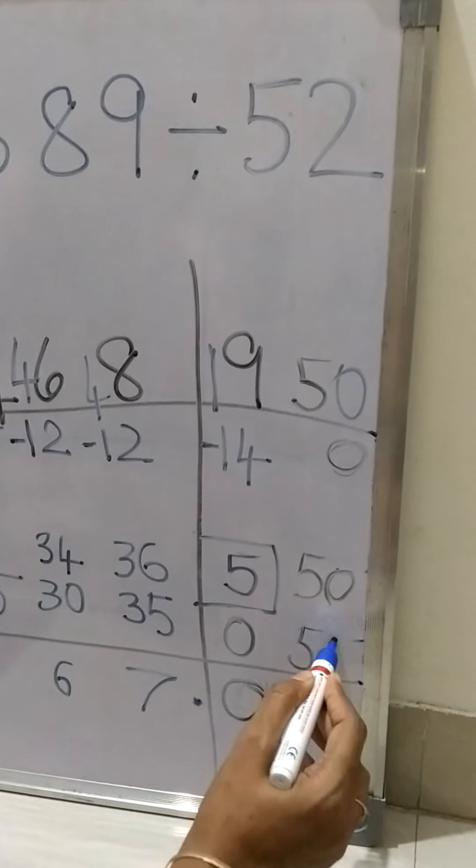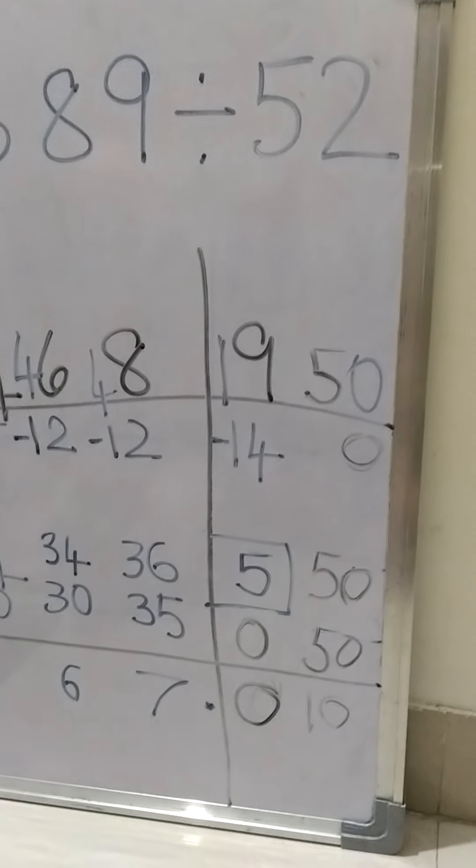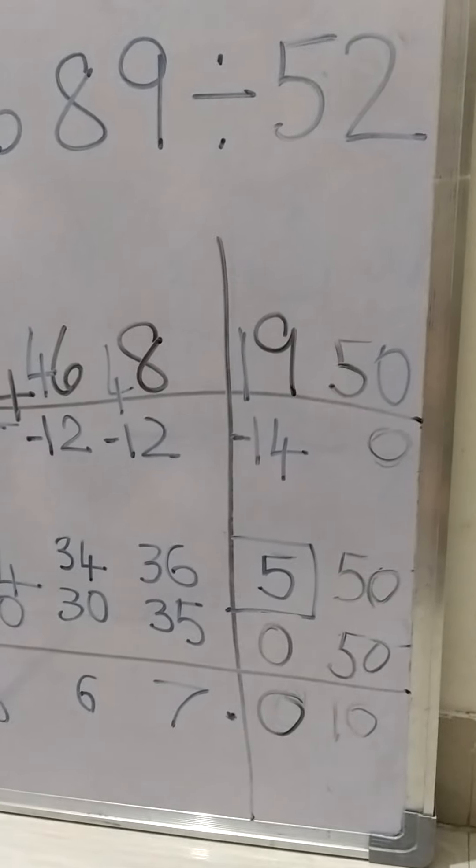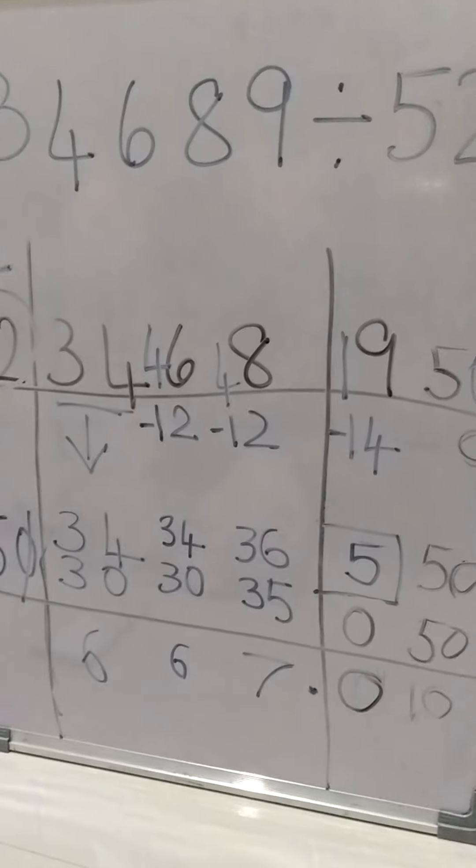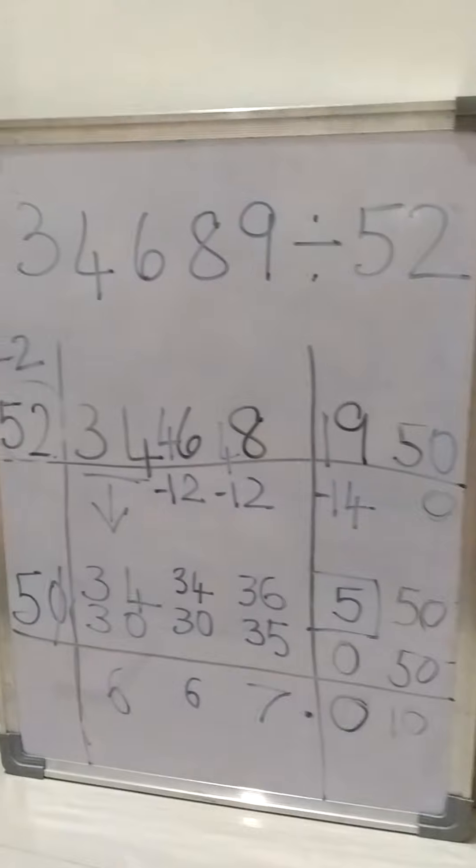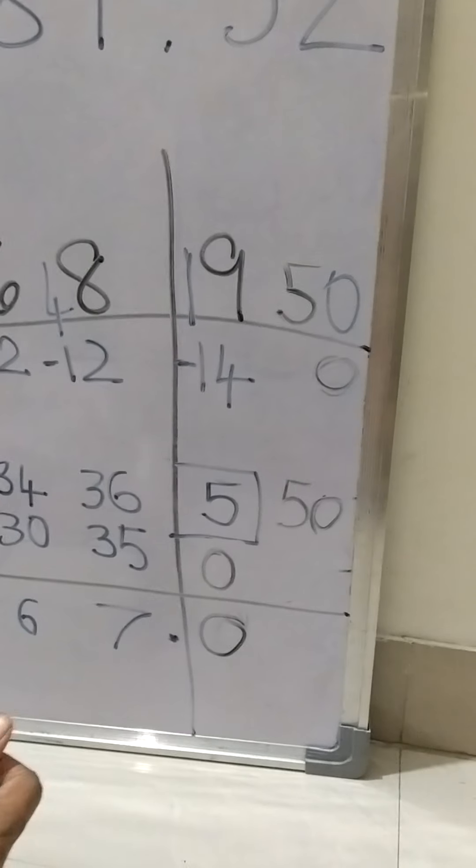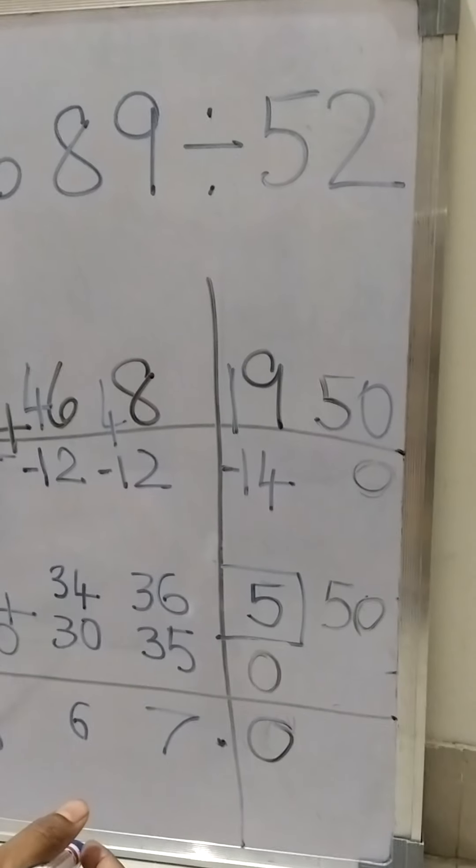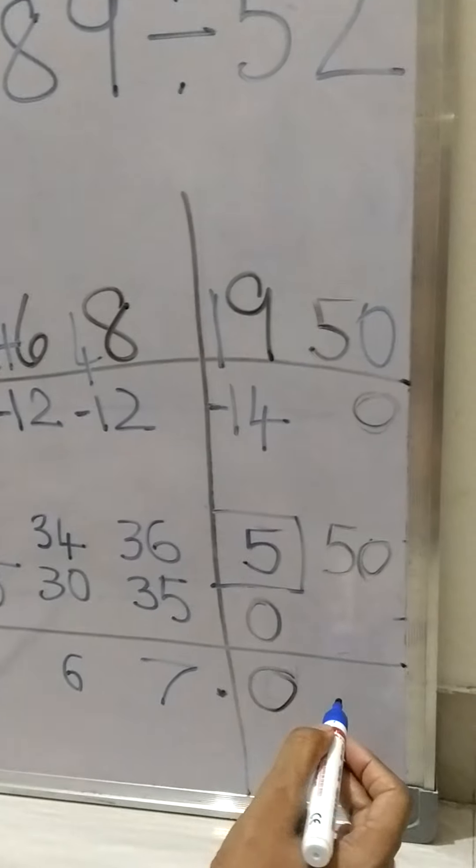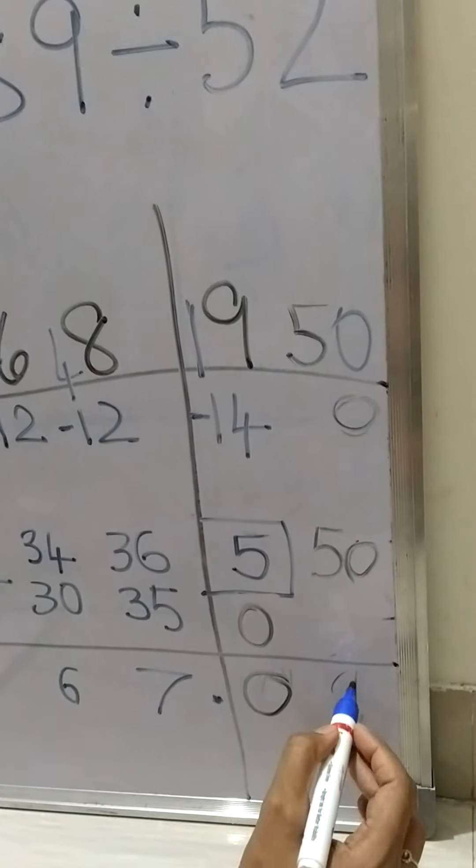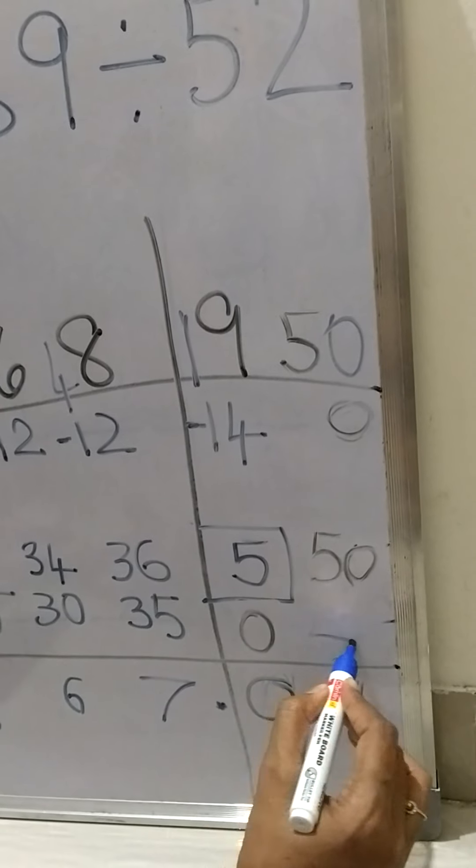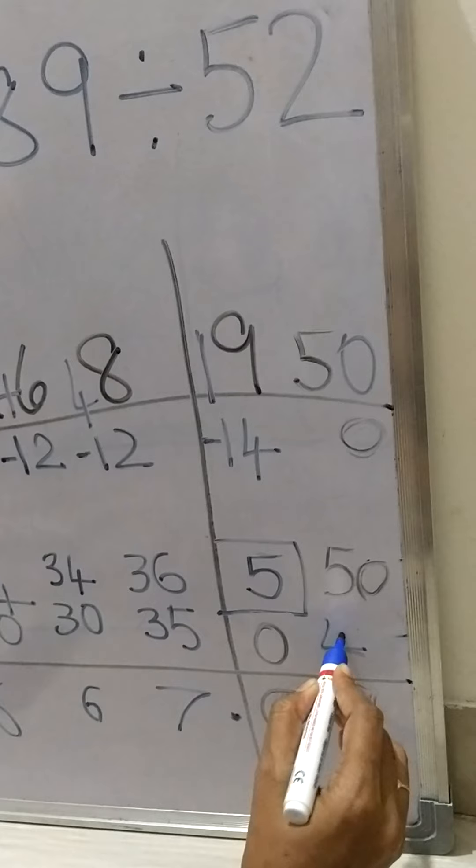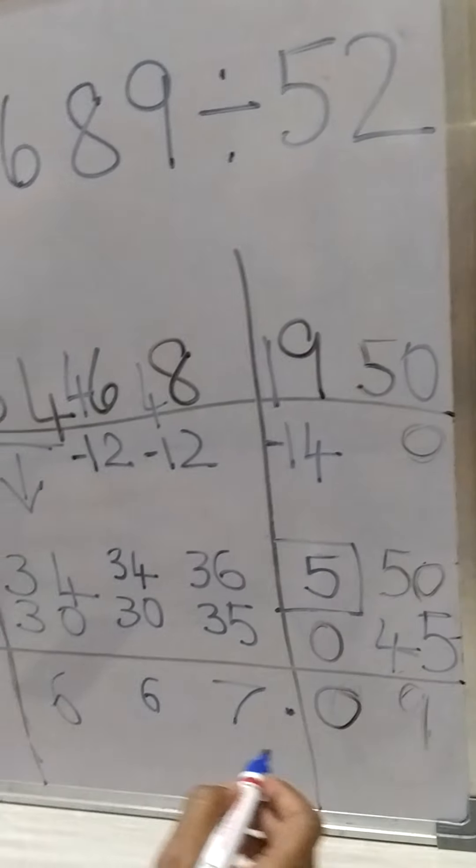Now we are going to stop here. Thanks for watching and hope it's clear. One more step I forgot: we can take 10, so we will take 5 nines, and that is 45. So we are going to stop till 2 digits.